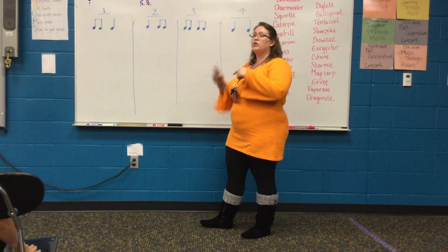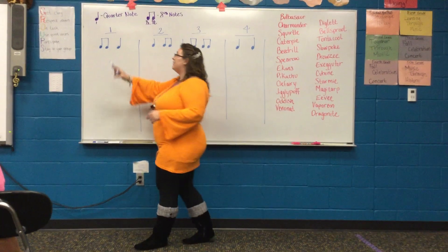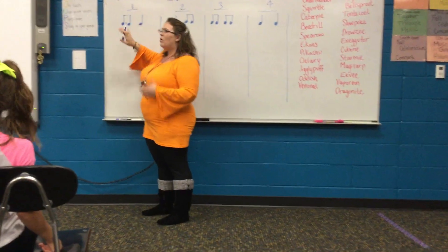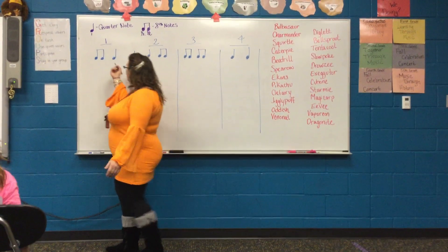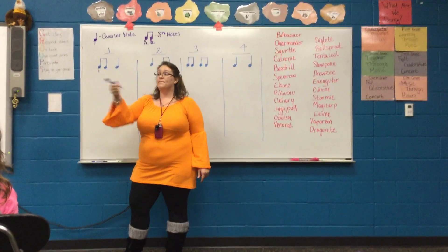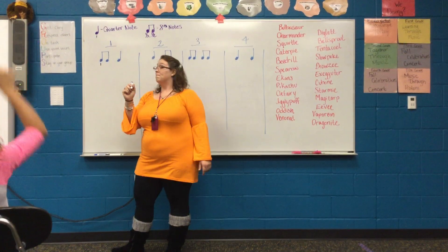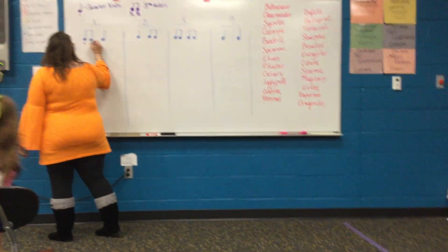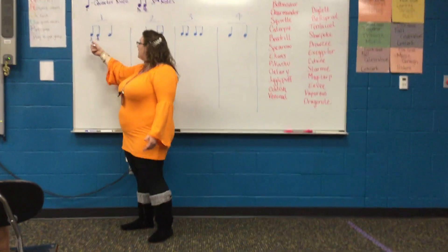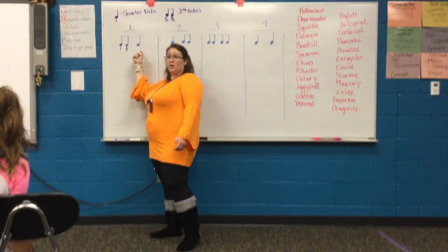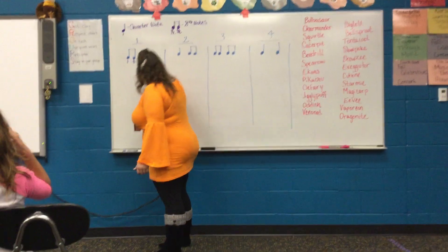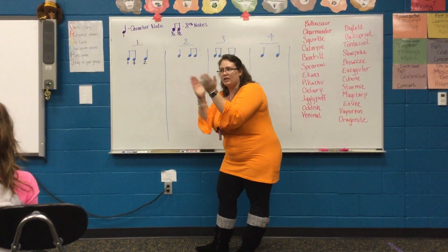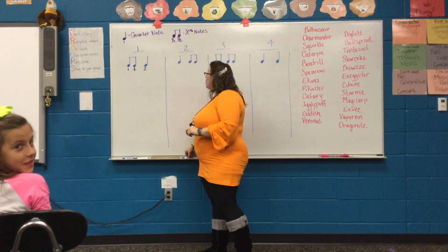Let's look at our first box. In this box we have a set of eighth notes and a quarter note. I always start with beat one. What am I going to put on the second half of that eighth note? The second half is always 'and.' That takes up the whole beat, so let's move on to beat two. To clap this one we would say: one-and-two. One-and-two.